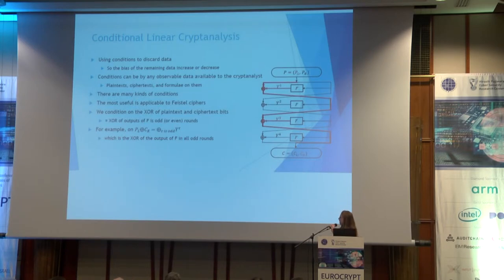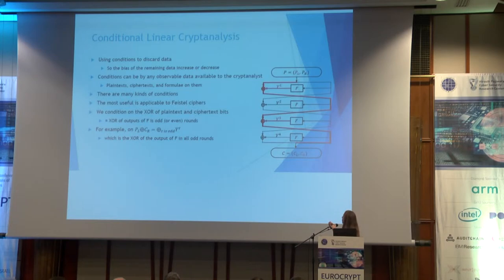As we can see here, the left half of the plaintext XOR the output of the f-function in the first round XOR the output of the f-function in the third round is equal to the right half of the ciphertext.